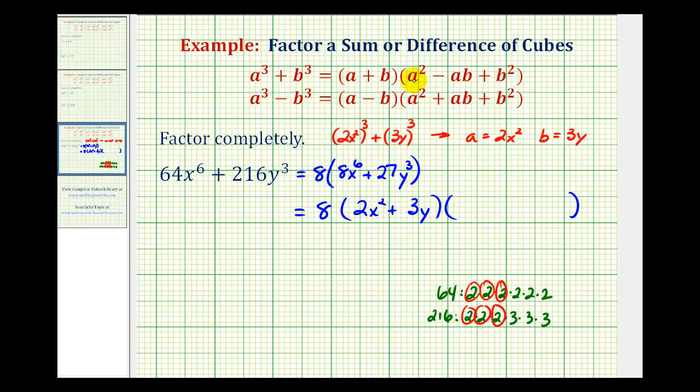The first term in the trinomial factor is a^2. So if a equals 2x^2, a^2 would be equal to (2x^2)^2, which would be 4x^4.